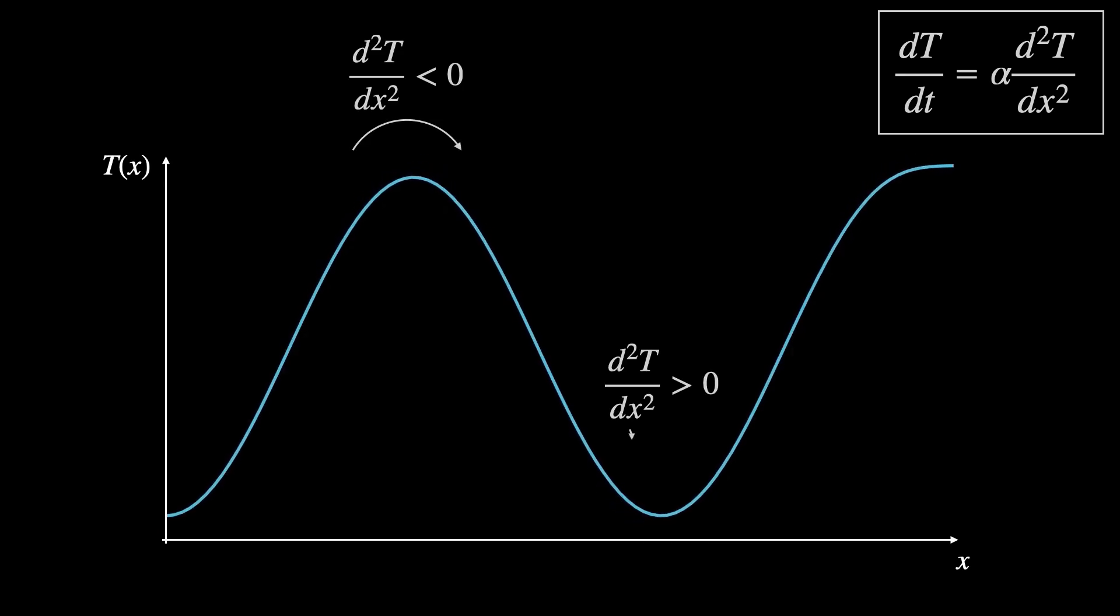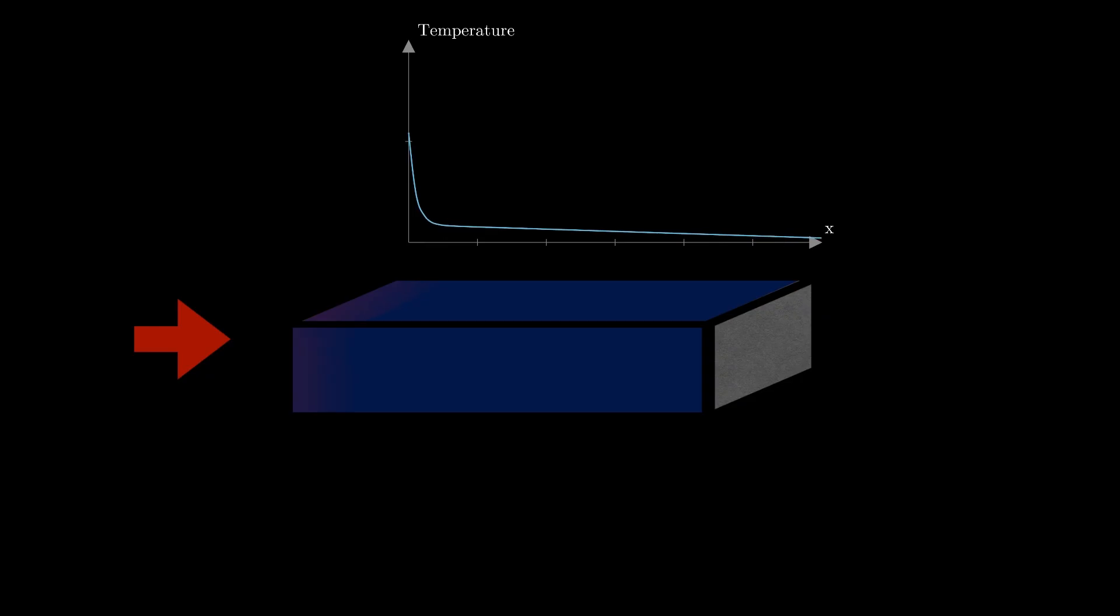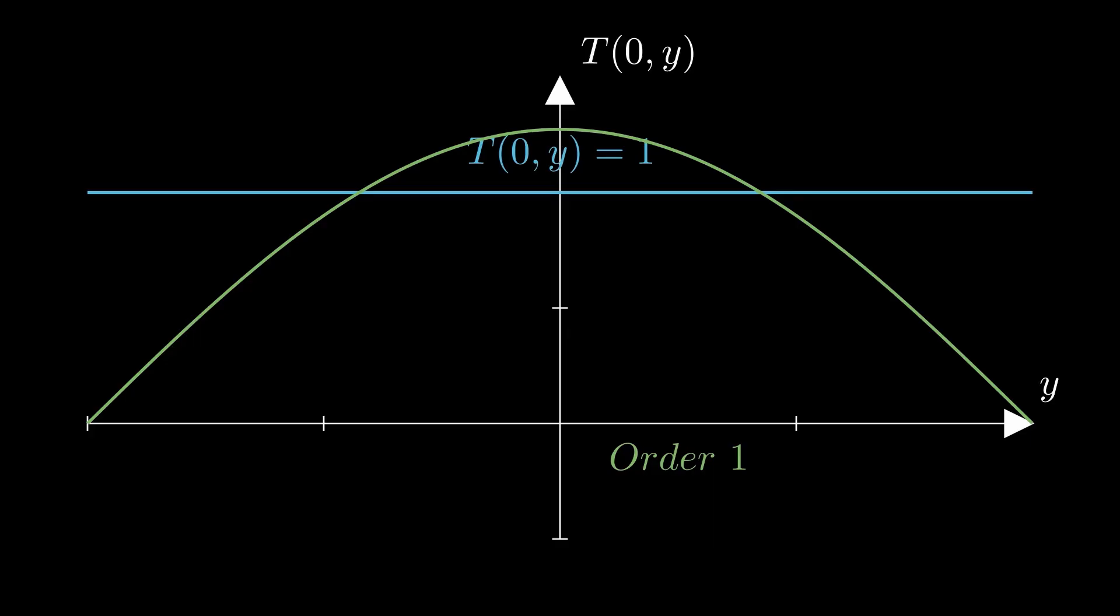Joseph Fourier changed mathematics forever. He was the first person to really understand how heat works and he needed some radical maths to be able to deal with it. That's how Fourier series were first discovered.